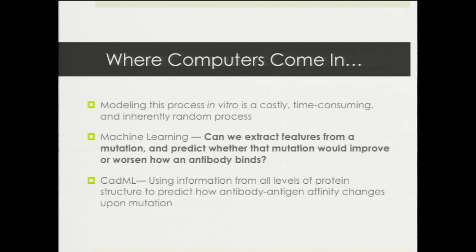If we want to mimic that process to design antibody therapies, doing it inside a lab is a bad idea because it's time-consuming and error-prone — you're inherently randomly mutating antibodies and trying to find versions that bind better. Here's where computers come in. Can we use computers to guide the design process by identifying favorable mutations that improve how well an antibody binds to its target? That's what my method, CatML, uses machine learning to predict: given a mutation, will it improve or worsen how well the antibody binds?